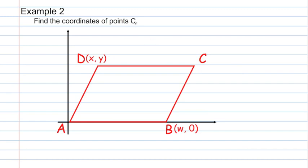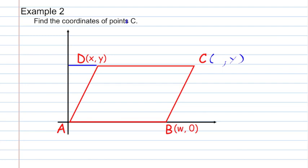Example 2: Find the coordinate of point C. What we're asked to do here is find the coordinates of point C. If you imagine that point C and point D are on the same level on the y-axis, represented here by y, then the y-coordinate of point C is y. The x-coordinate is not going to be as hard as you might think. The distance from here to here is x, which gives us the x-coordinate of point D.